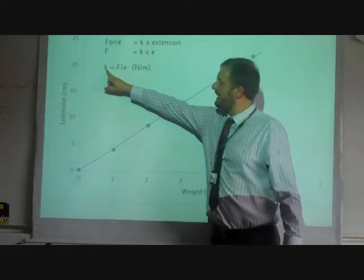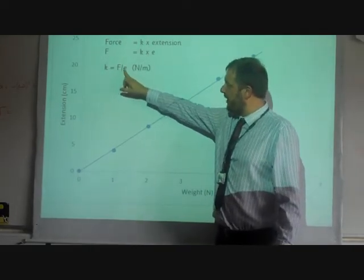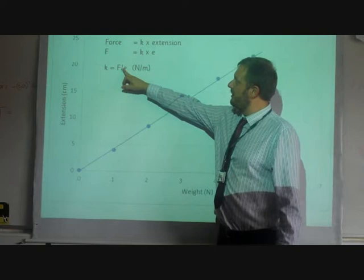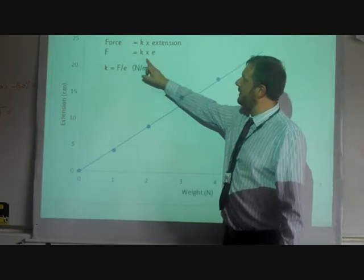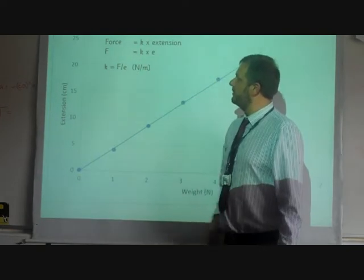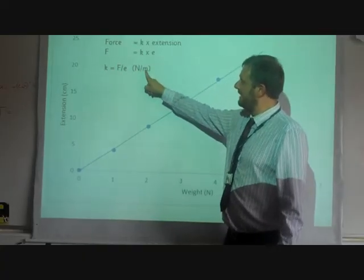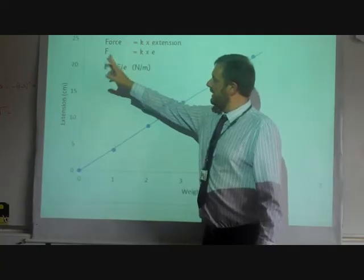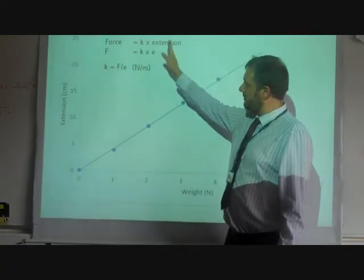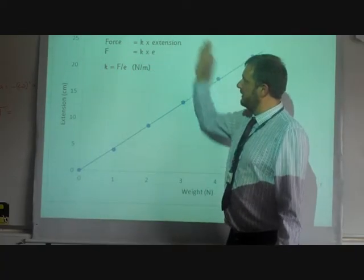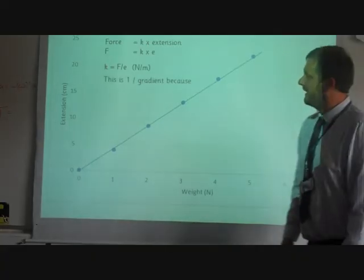If we just rearrange that, I'm going to say K equals the force divided by the extension, F divided by E. So I've divided this side by E, and divided that side by E, and the E's have cancelled. We know the units for K from this are newtons per meter. So the spring constant is how much force you need to apply to stretch a spring by one meter.